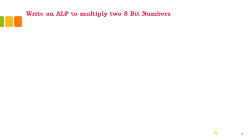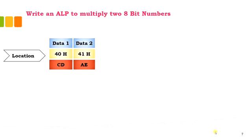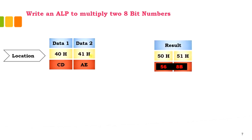The task is to write an assembly language program to multiply two 8-bit numbers. We will consider memory locations 40H and 41H, with data CD present in 40H and AE present in 41H. The result will be stored in 50H and 51H. To perform this multiplication, we will use the arithmetic instruction MUL A,B.